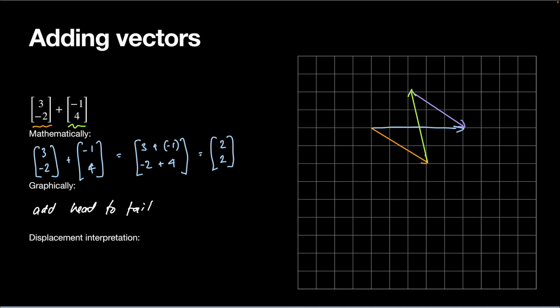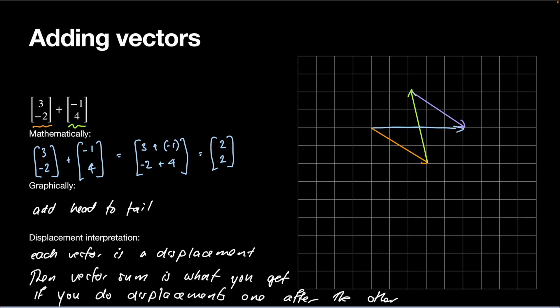We've learned about displacements, so if we interpret this as displacements, each vector is an individual displacement and the vector sum is what you get if you do those displacements one after the other. For example, a displacement of 3 across and 2 down, then 1 left and 4 up, then 3 across and 2 down gives an overall displacement of 5 across and 0 up — the vector 5, 0.